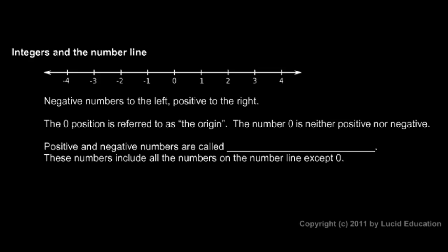The positive and negative numbers are sometimes referred to as signed numbers because they have a positive or a negative sign with them, and the signed numbers include all the numbers on the number line except the number zero.